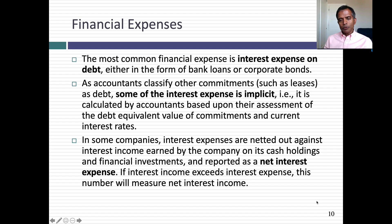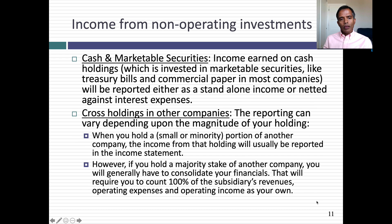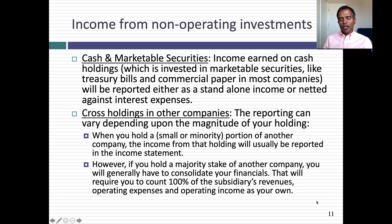In some companies, interest expense is netted against interest income the company earns on its cash and marketable securities and reported as a net item. If you have a lot of cash and very little debt, that net interest expense can become a negative number — meaning interest income exceeds expense. Once interest expense is handled, there's one more cleanup: if your company has non-operating assets, the income from them shows up below the operating income line. Many companies hold millions or billions in cash invested in marketable securities like T-bills or commercial paper, earning income — that income appears below the operating income line.